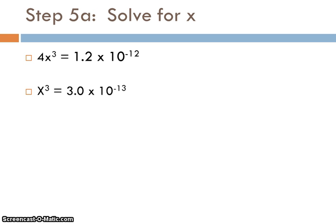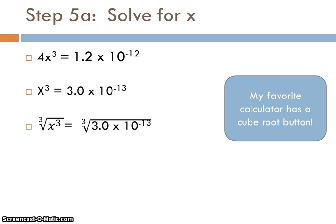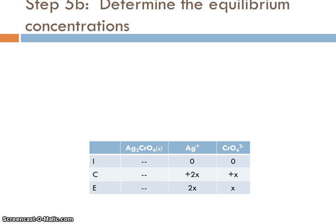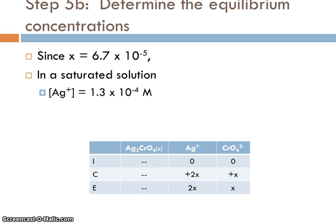Dividing both sides by 4 and taking the cube root: X = 6.7 × 10⁻⁵. Since [Ag⁺] = 2X, the silver ion concentration in the saturated solution is 1.3 × 10⁻⁴ M, and [CrO₄²⁻] = 6.7 × 10⁻⁵ M. All KSP problems fit into these two basic categories. Practice, practice, practice — that's really the best advice.